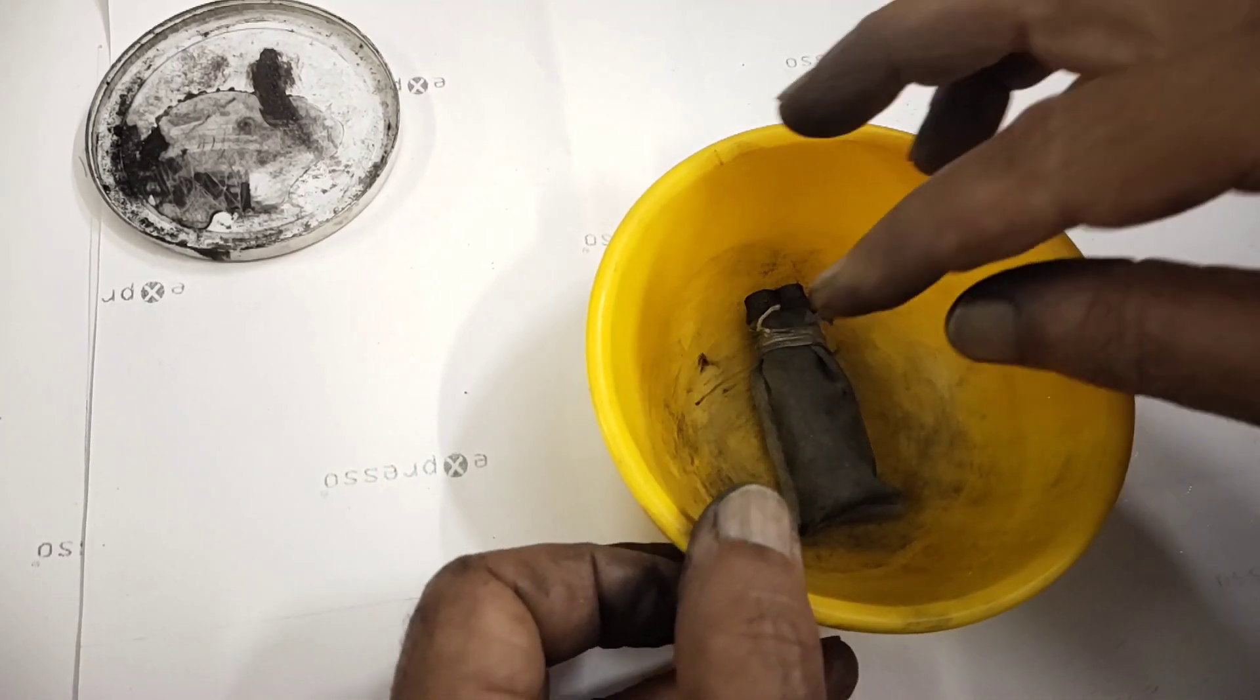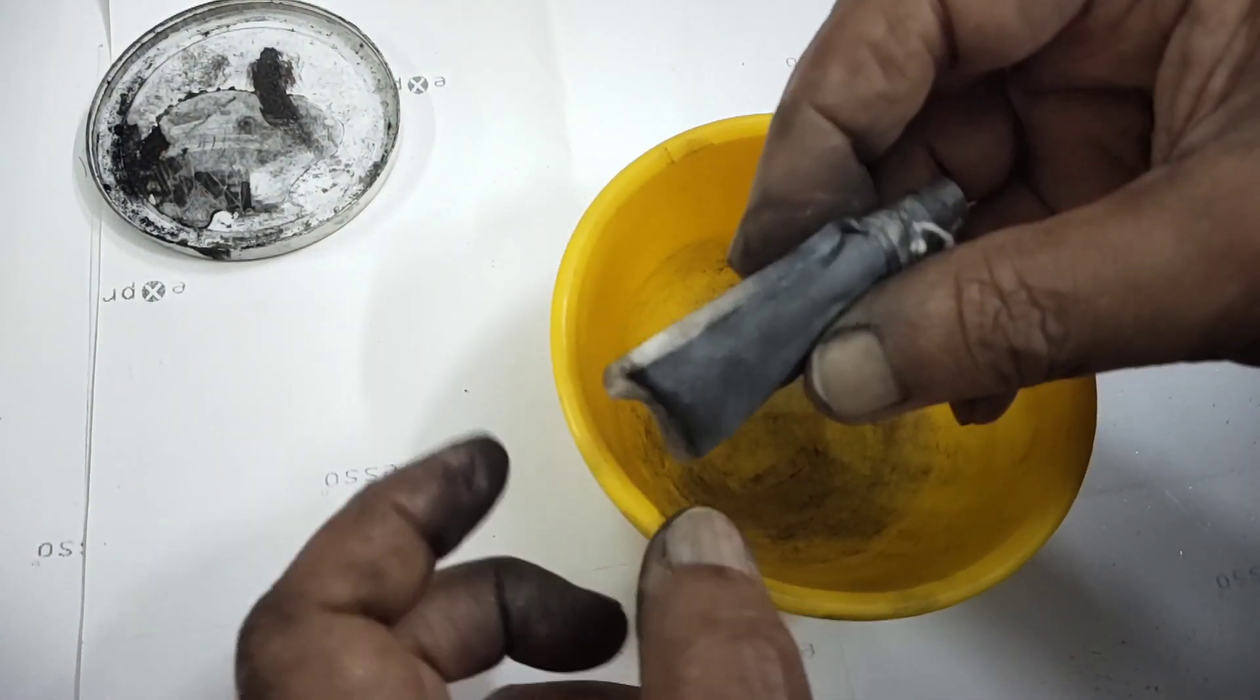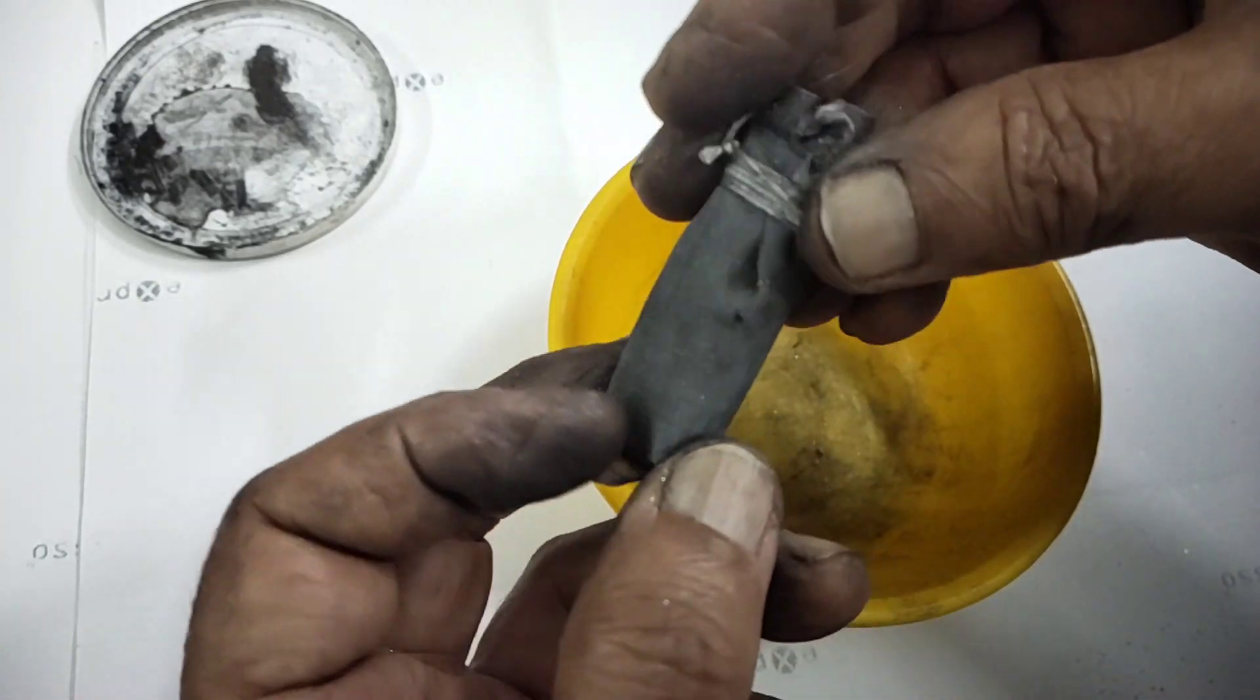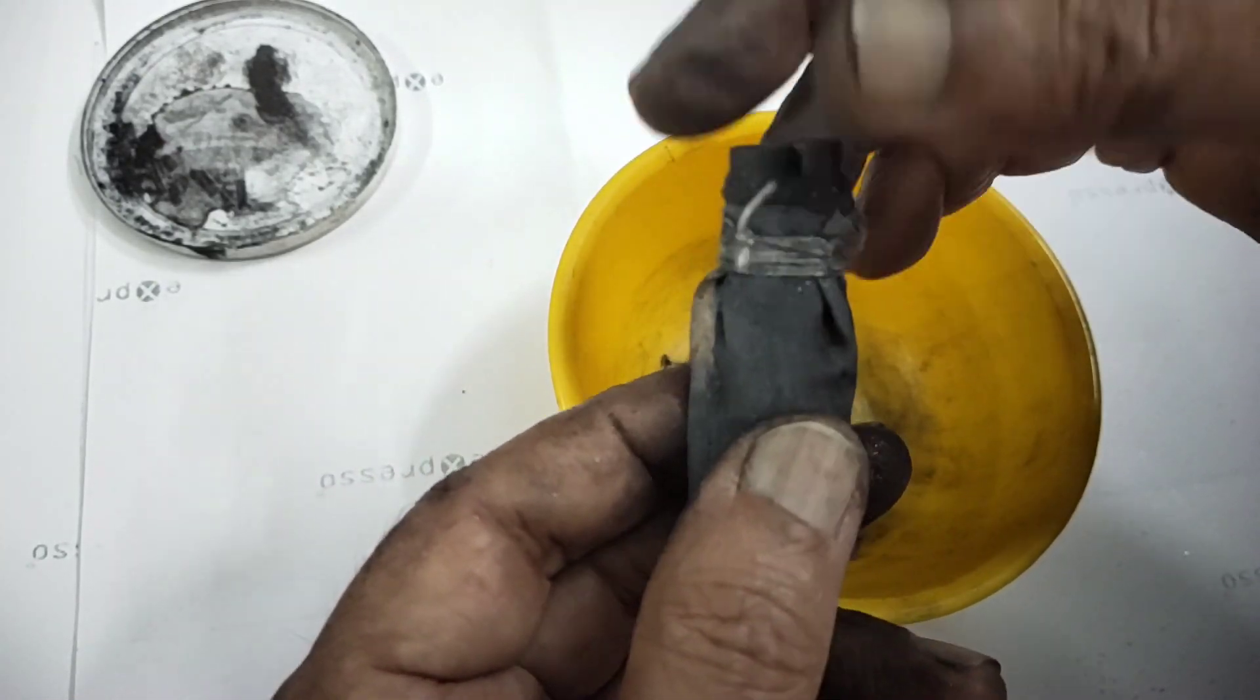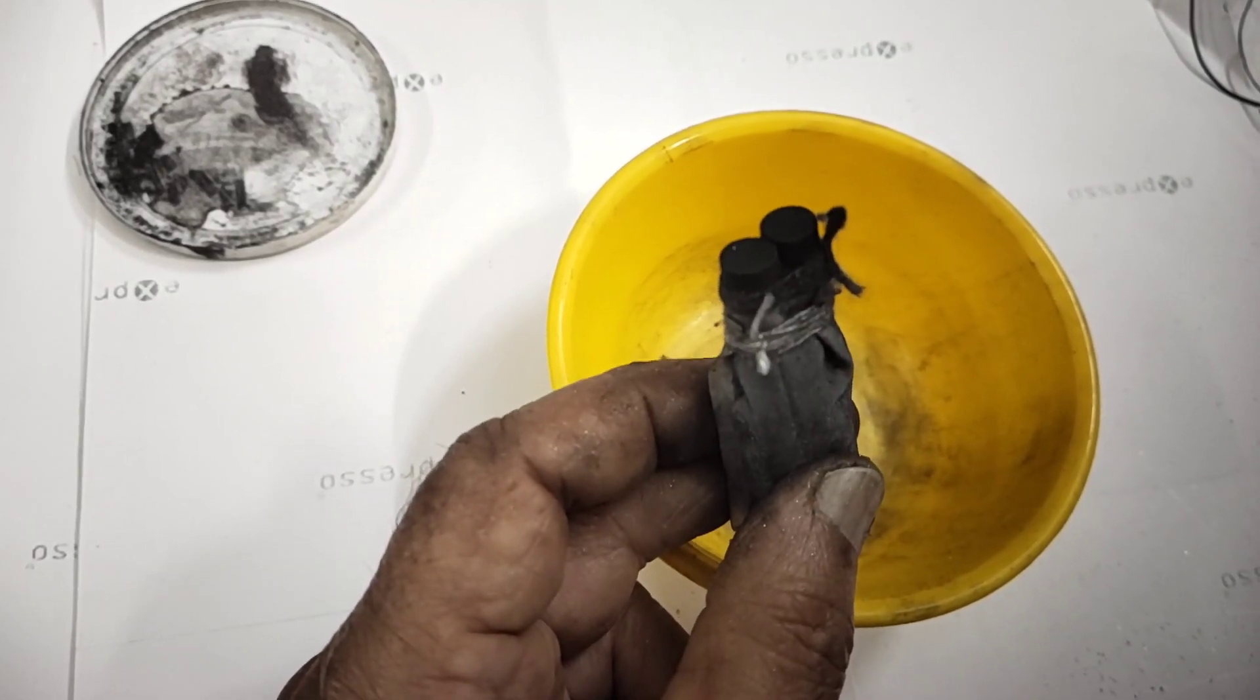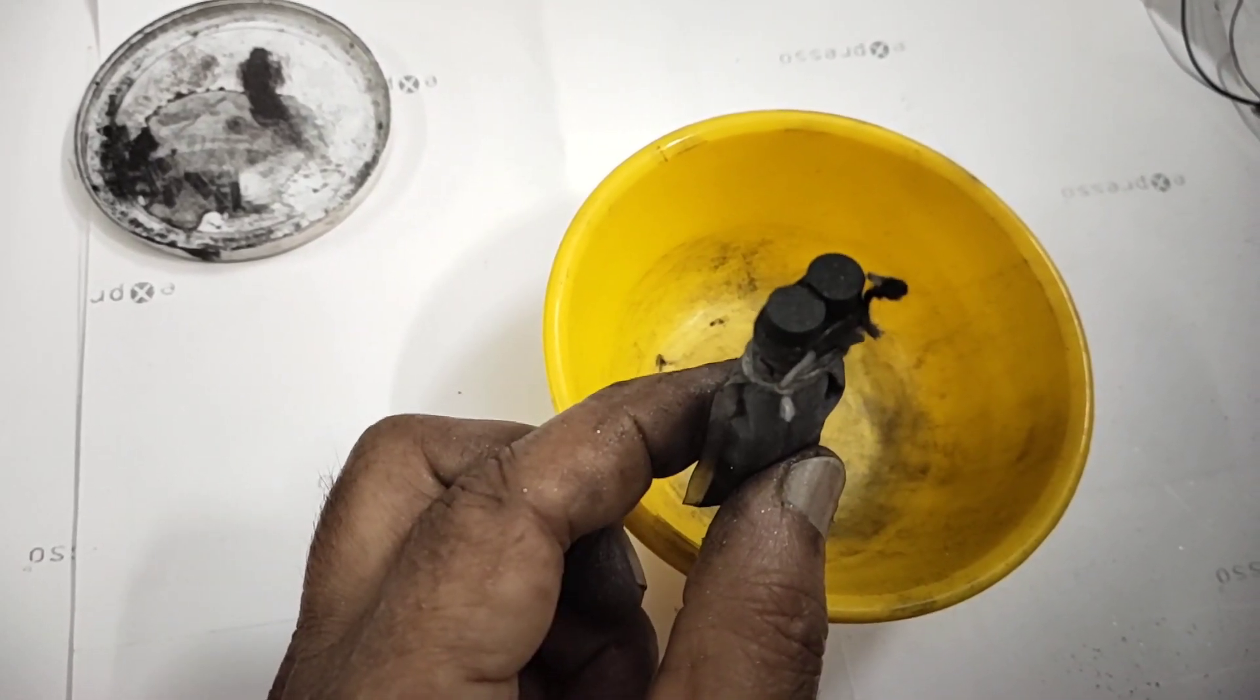I have tied it using a strong twine thread. I have made this electrode, the positive electrode with a double. Now we have to make the electrolyte, mix the electrolyte that I will show you now.